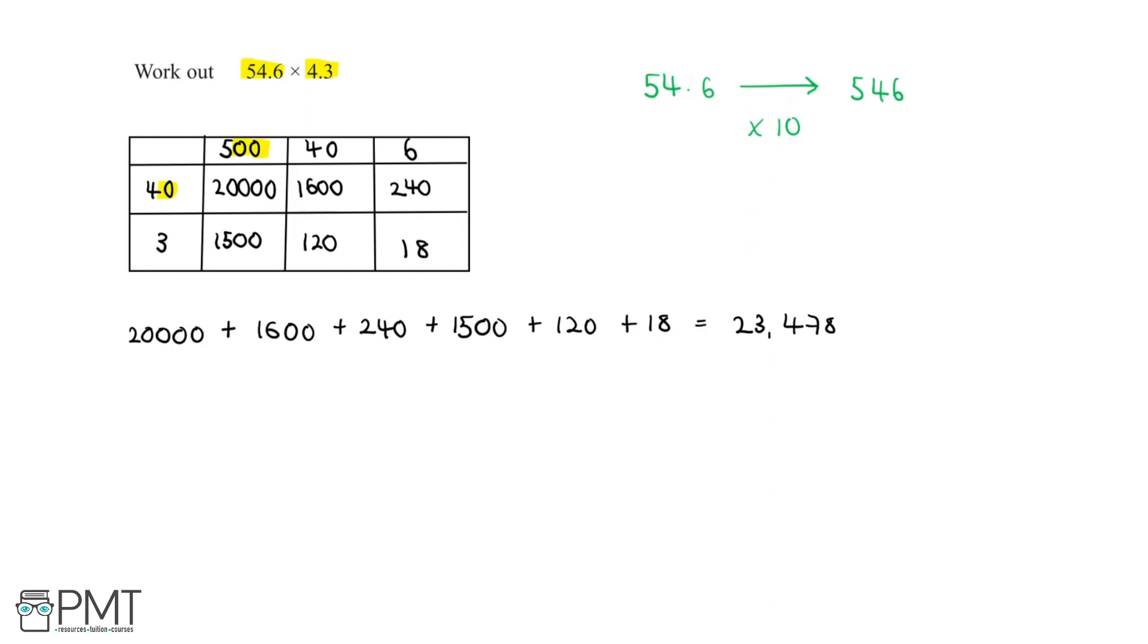Now let's look at 4.3. We started off with 4.3, and to get to 43, we multiplied by 10. But this isn't actually the question, because the question was 54.6 times 4.3. So we multiplied both numbers by 10, which means we multiplied a total of 10 times 10, which is 100.